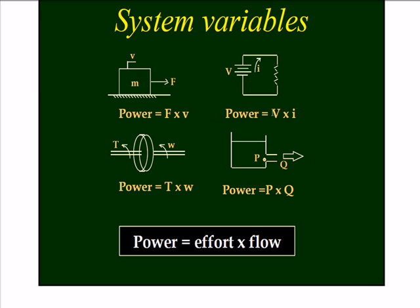On the electrical system, the product of the voltage and the current is also power. On the rotational system, torque and the angular velocity. Here we have power, which is a volume flow rate and pressure.